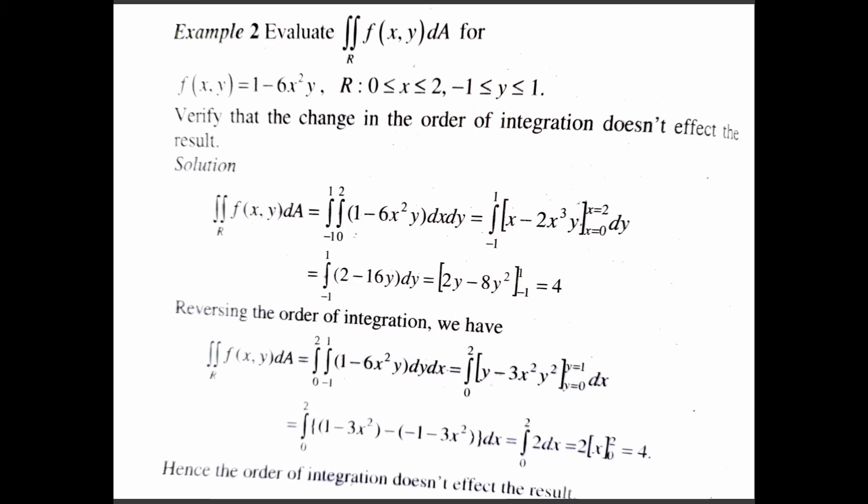Reversing the order of integration: the double integral equals integral 0 to 2, integral -1 to 1 of (1 - 6x²y) dy dx. Integrating with respect to y and evaluating from -1 to 1, we get integral 0 to 2 of [(1 - 3x²) - (-1 - 3x²)] dx, which simplifies to integral 0 to 2 of 2 dx. That equals [2x] from 0 to 2, which is 4. Hence, the order of integration does not affect the result.